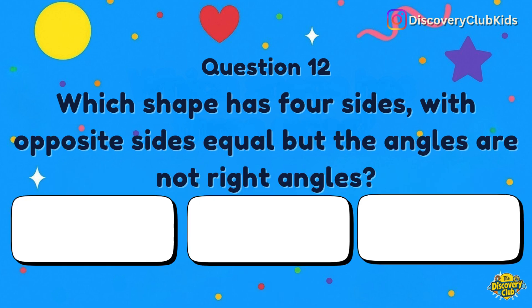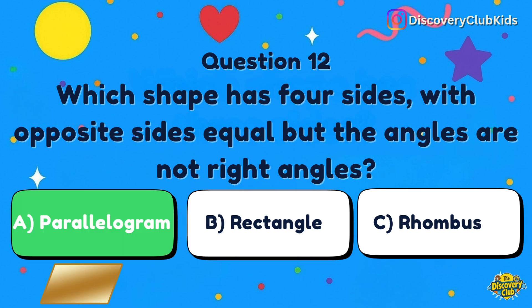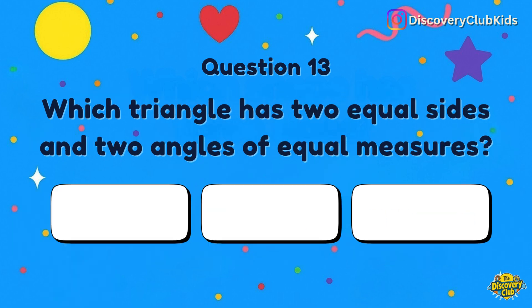Question number 12: Which shape has four sides with opposite sides equal, but the angles are not right angles? Your choices are parallelogram, rectangle, or rhombus. The correct answer is parallelogram.